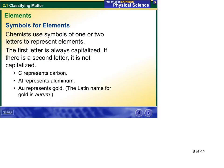We got symbols for elements, such as C for carbon, Al for aluminum. Then you got some that are a little different, like Au for gold. Latin name for gold is aurum, and that's where the Au comes from.